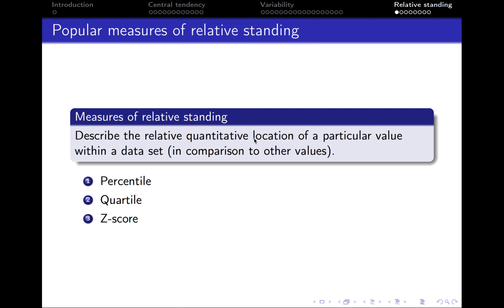And finally the last type of measures is the measures of relative standing. Those measures allow us to describe the relative quantitative location or position of a particular value within a data set in comparison to other values. In simple words, those measures will allow us to compare one value to the other values within the data set. And there are three measures that we will analyze: percentile, quartile, and z-score.